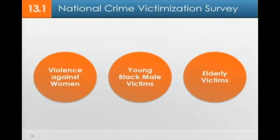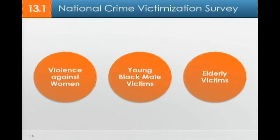In the NCVS, there are three classifications that are broken out separately: violence against women, violence against young Black male victims, and elderly victims. These three are broken out because of the special nature of the criminal activity within these groups, and so they are reported separately alongside other victimizations within the survey.